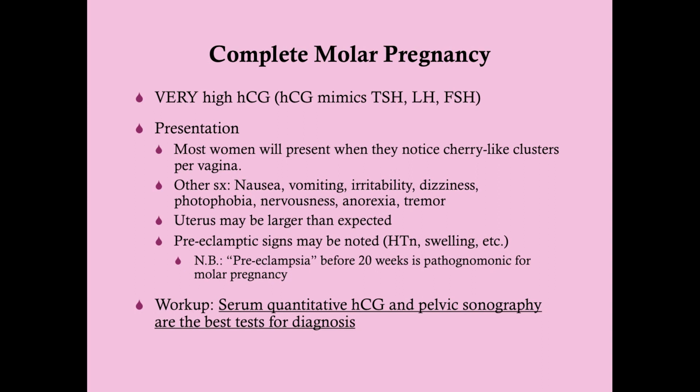If you ever have preeclampsia-like signs before 20 weeks — hypertension, swelling, protein in the urine — that is pathognomonic for molar pregnancy. Preeclampsia tends to happen in the second and third trimester, not the first trimester.